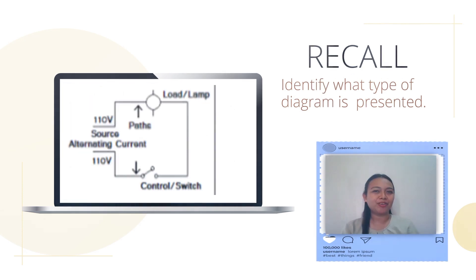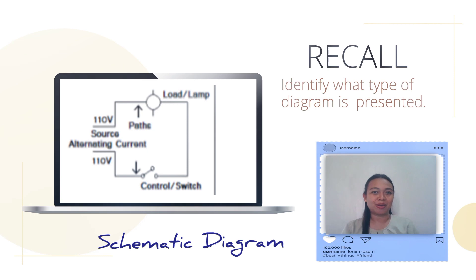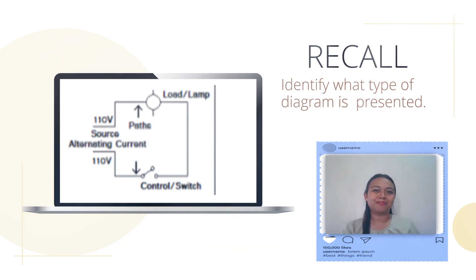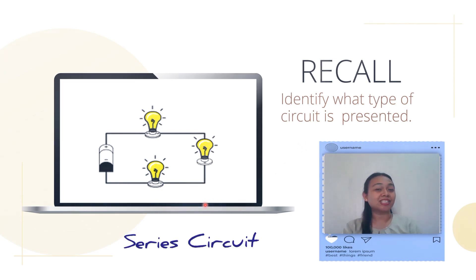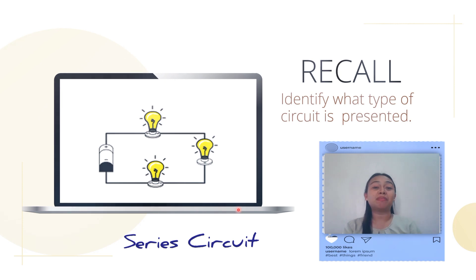How about the second one — can you identify what type of diagram is presented? This is a schematic diagram. The schematic diagram is a sketch showing electrical components using electrical symbols. Next, can you identify what type of circuit is being presented? It is a series circuit — a type of circuit in which lamps are arranged in a chain so that there is only one path to take.